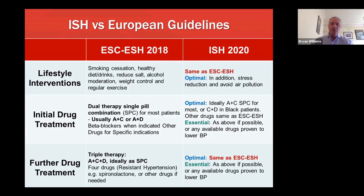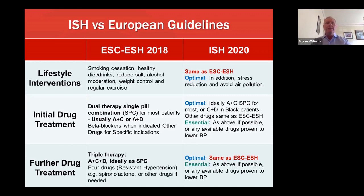In terms of drug treatment, both guidelines for optimal care recommend initiating therapy in most patients with two drugs, ideally as a single pill combination. The combinations in Europe are either an ACE inhibitor or an ARB with a CCB or diuretic. In the optimal care arm of the ISH guideline, the preferred combination is an ACE inhibitor or an ARB with a CCB, or the option of using a CCB and a diuretic in people of black African origin.